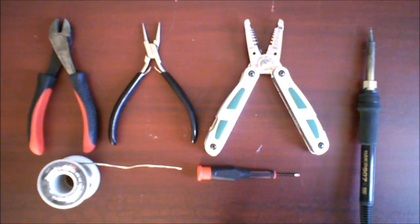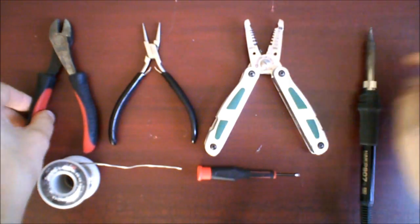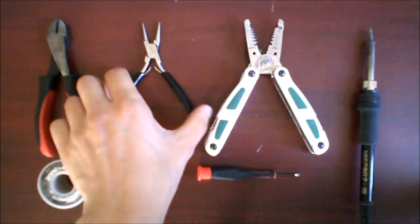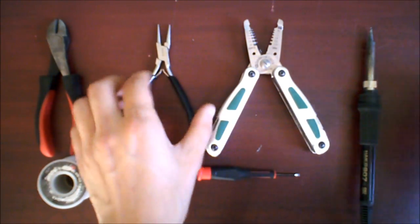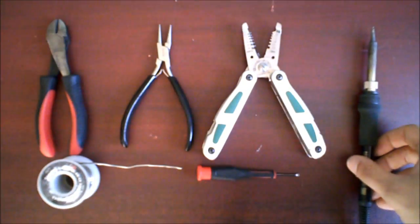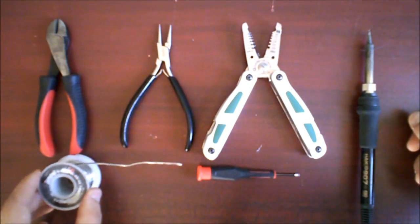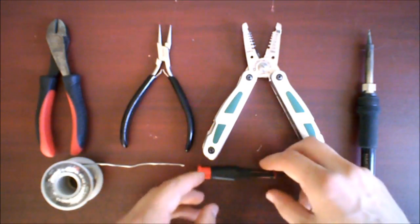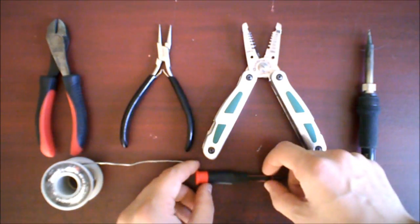All right, what tools do we need? Not too many. We've got wire cutters, needle-nose pliers, wire strippers for stripping off the plastic sleeve, soldering iron, solder of course, and a small Phillips-head screwdriver.